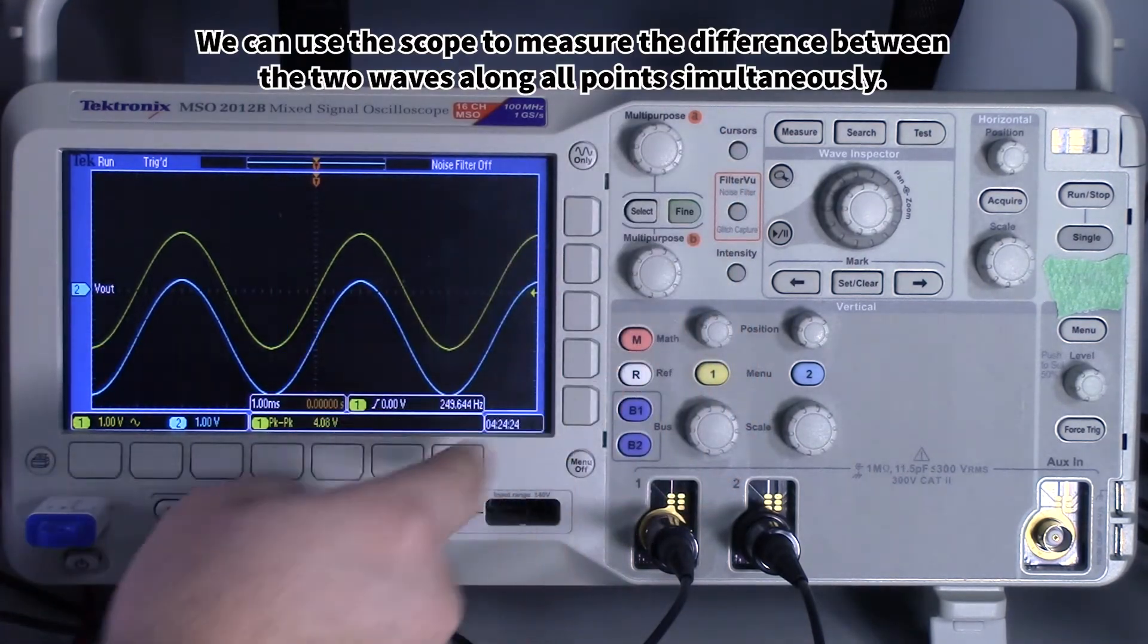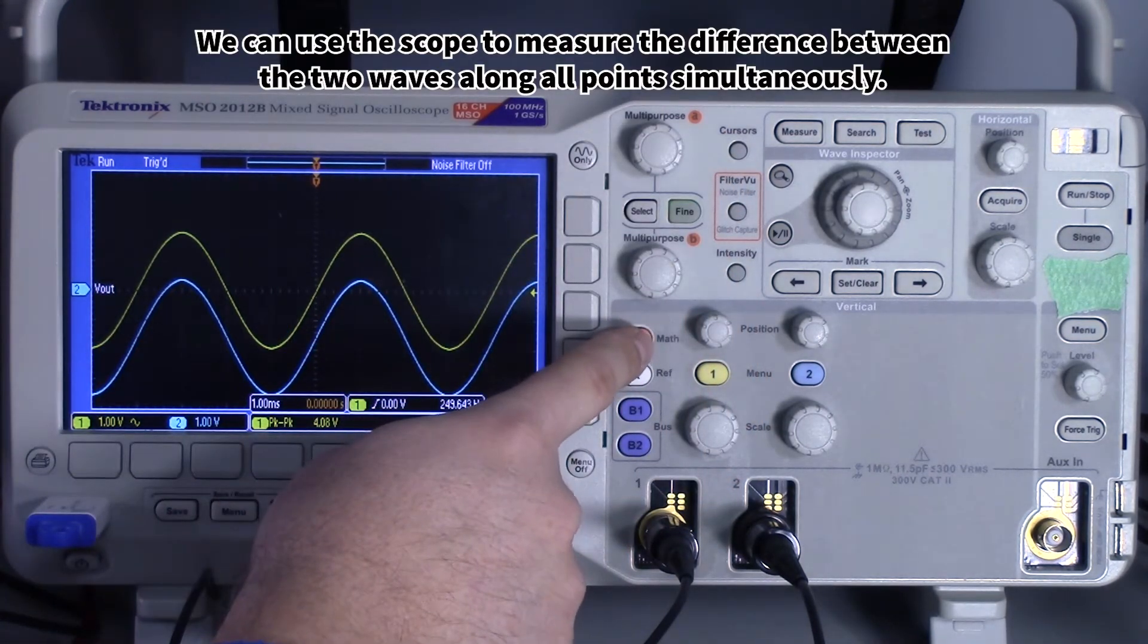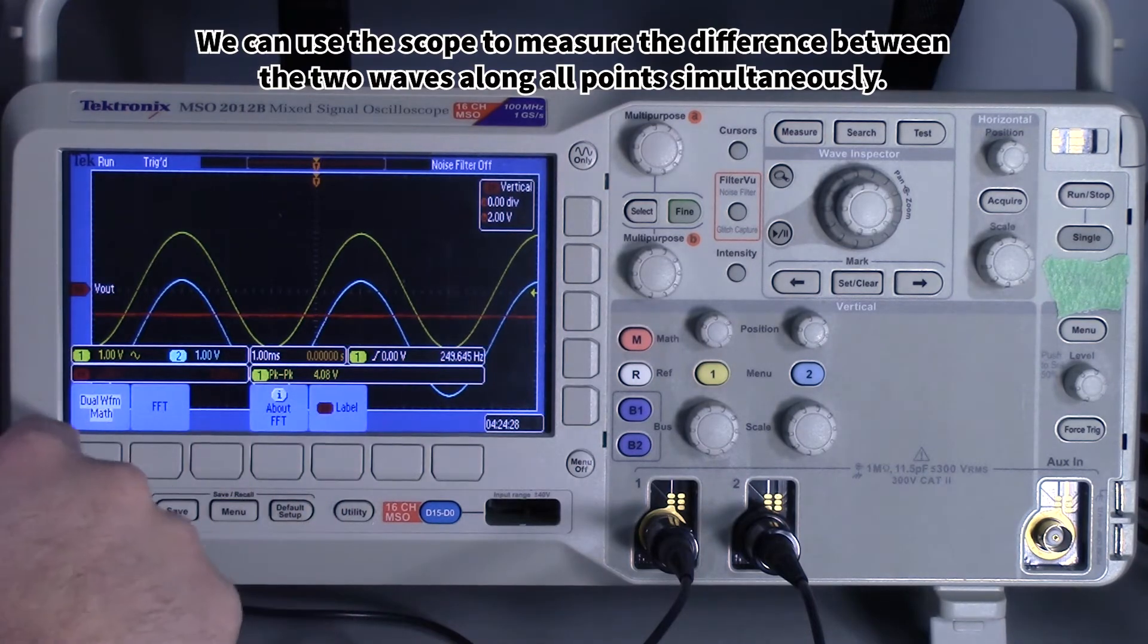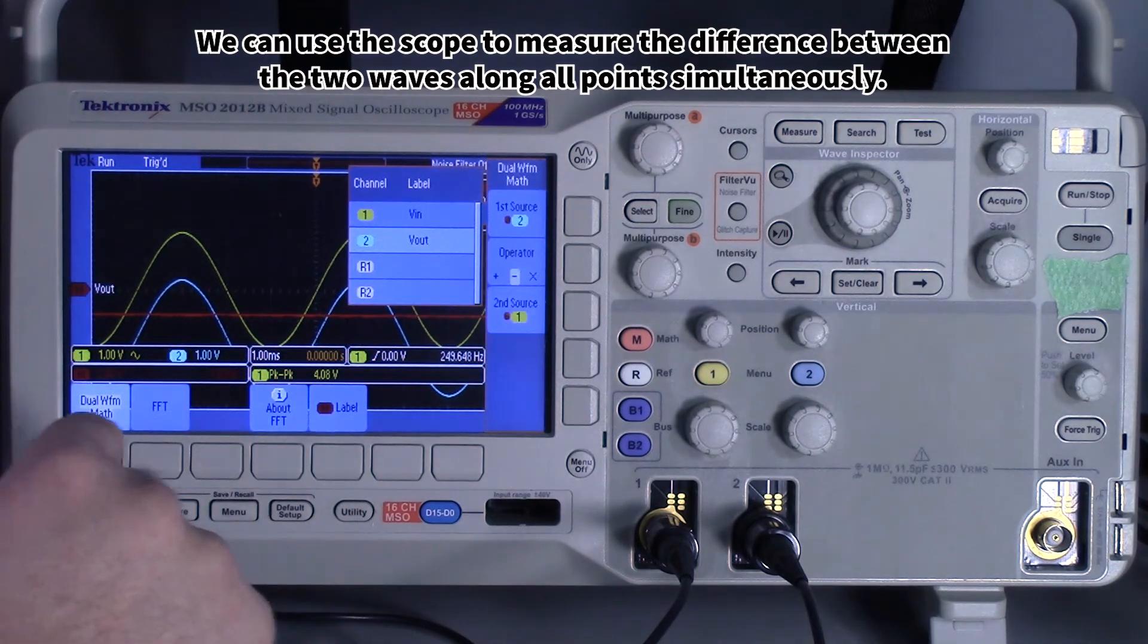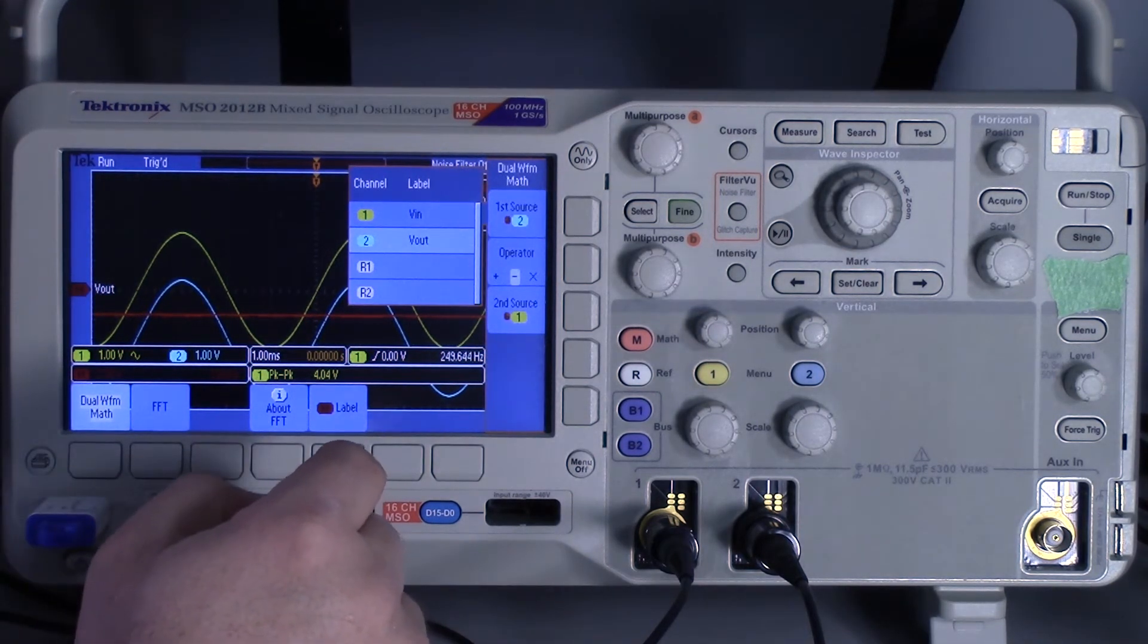So I'm going to turn that off and what we're going to use is the math function. So I'm going to press this button and I want dual waveform math, and in this case, let's see, channel 1 is on the top, so I want channel 1 minus channel 2.